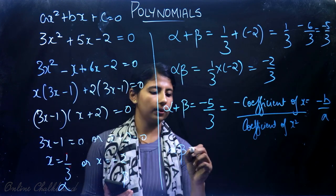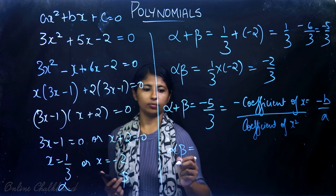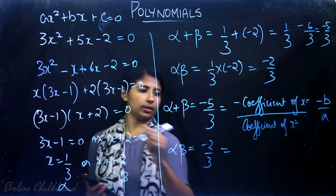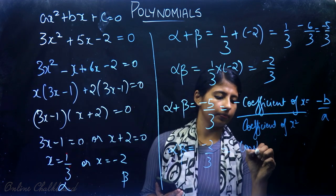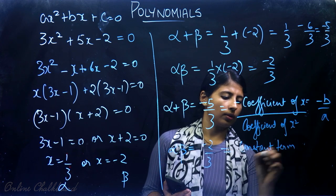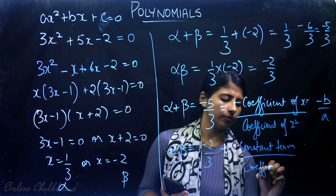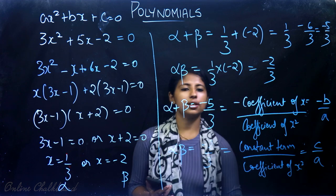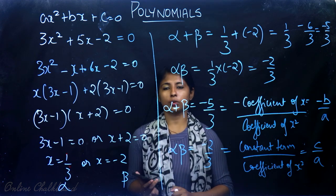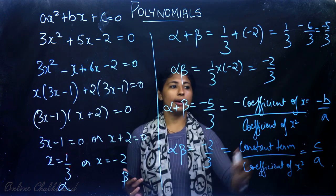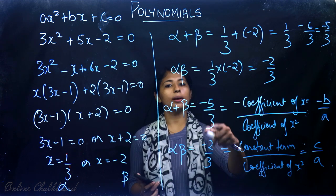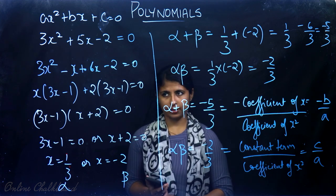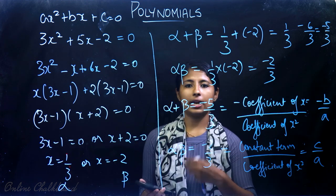Product of roots: α × β = (1/3) × (-2) = -2/3. And constant term by coefficient of x² is c/a = -2/3. So α × β = c/a. In general, for any quadratic equation, sum of zeros = -b/a, which is negative of coefficient of x by coefficient of x², and product of zeros = c/a, which is constant term by coefficient of x².